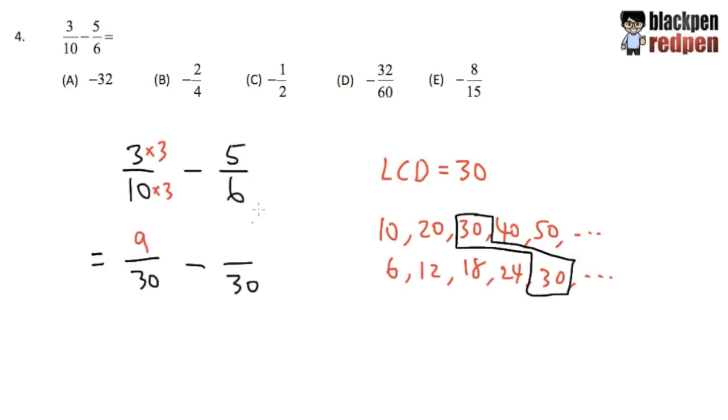For the second fraction, we focus on the bottom. 6. 6 times what will be 30? Well, 6 times 5 will be 30. And then we do the same on the top. We multiply by 5. And then we work out 5 times 5. That will be 25. Okay? So this is how we make the necessary change. And then you see that now these two fractions, they have the same denominators.